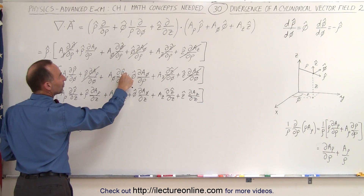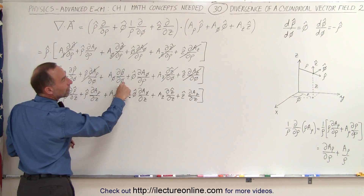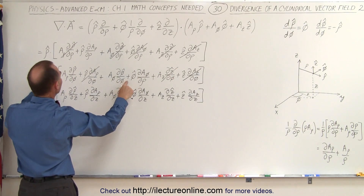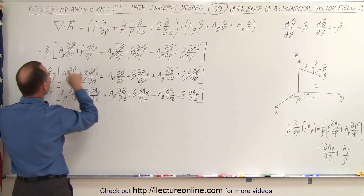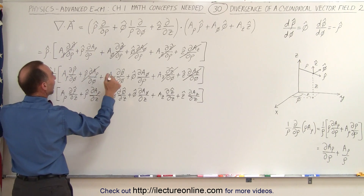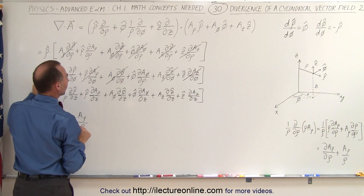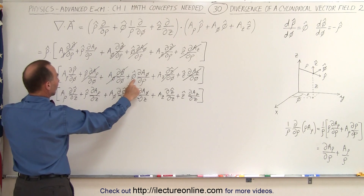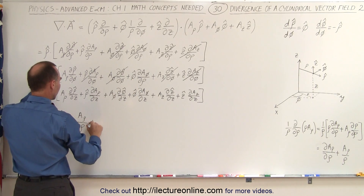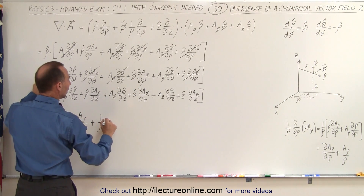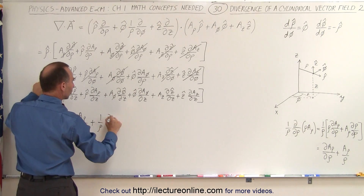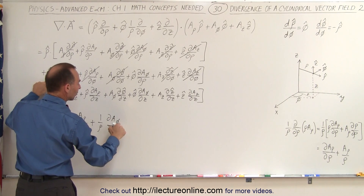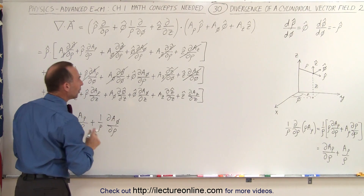What about the phi unit vector with respect to phi? That gives minus rho-hat, and minus rho-hat times the phi unit vector gives zero — so that term disappears. Then this term times this term: that product is one, so we end up with plus one-over-rho times the partial of a_phi with respect to phi. That is the phi component of a.